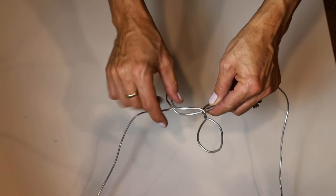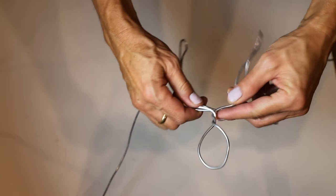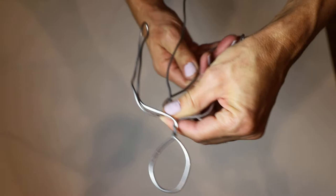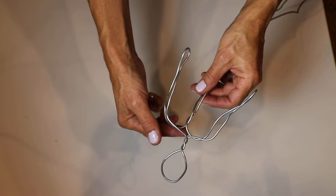Now the ends of these wires are going to drop down to form the spine. So these drop down to form the spine. Now twist.